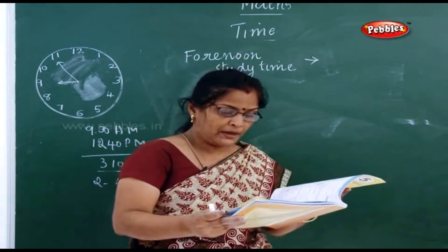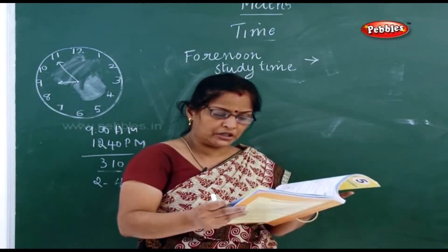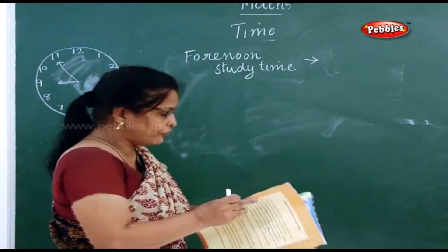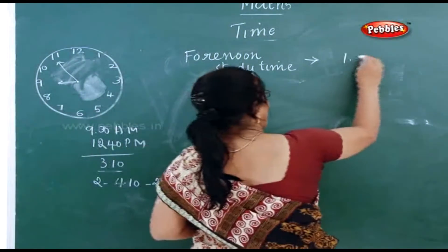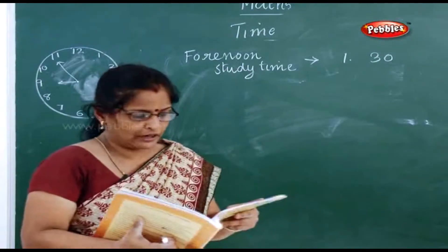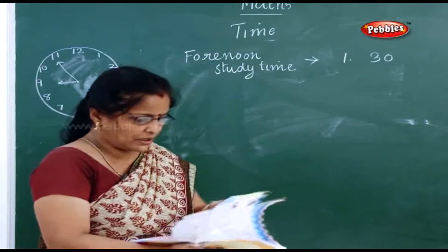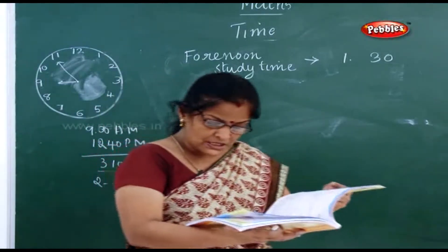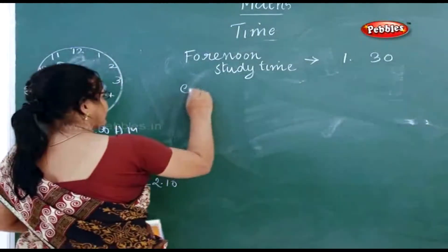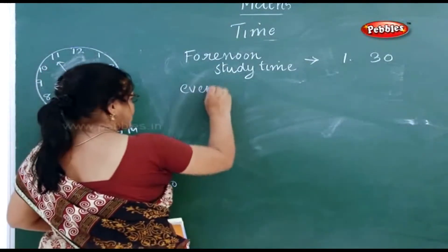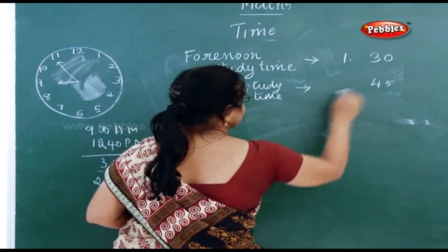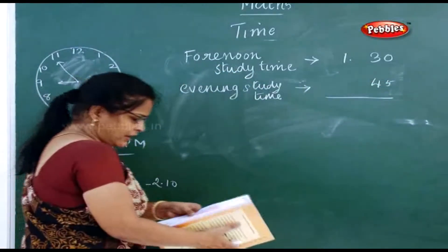It is given in your morning time — study time from 7 o'clock to 8:30 AM, so 1 hour and 30 minutes. Now what is the evening study time? From 6:45 to 7:30, so it means 45 minutes. Evening study time is 45 minutes.